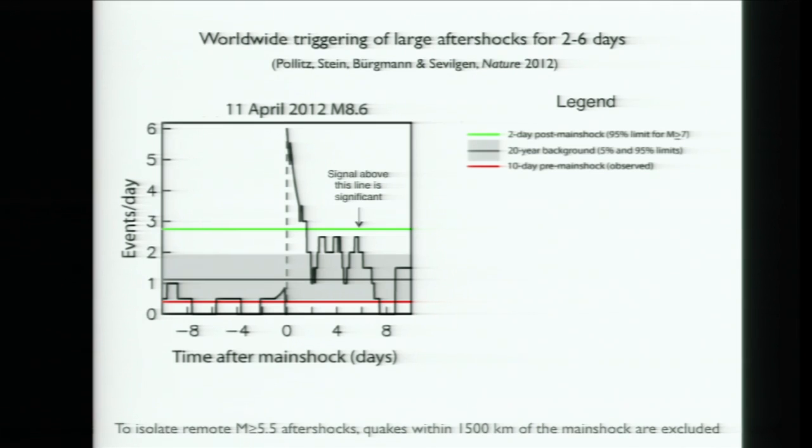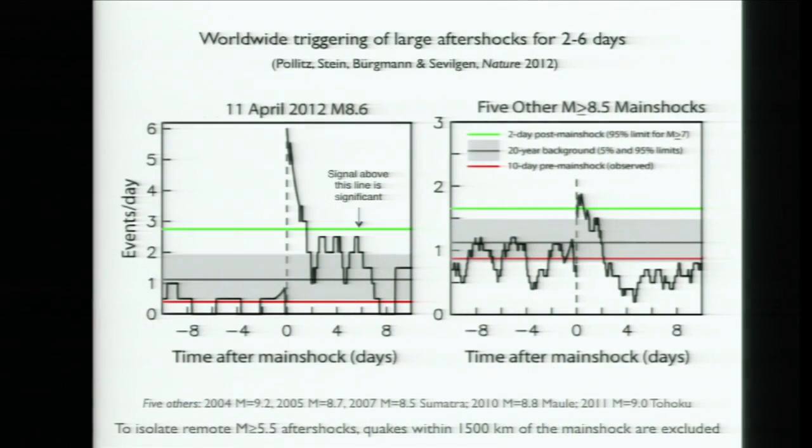If this 8.7 can produce global aftershocks, what about the 9.2 in Sumatra — that's 20 times larger? What about the 9.0 in Japan? What about the 8.8 in Chile? We took all the worst offenders, rounded up the usual suspects, and stacked them to see how they looked. That's kind of an eye-of-the-beholder figure — if you believe it, you can convince yourself it's there; if you're skeptical, you could convince yourself it's not.